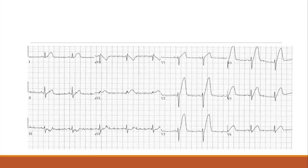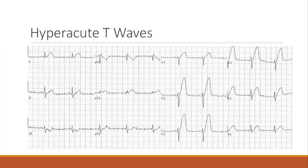Big T waves — big T waves, right? This is not a left bundle because the QRS is narrow. So what's the differential diagnosis for big T waves? Hyperkalemia, and probably also coronary artery occlusion considering the presentation. So these are hyperacute T waves.